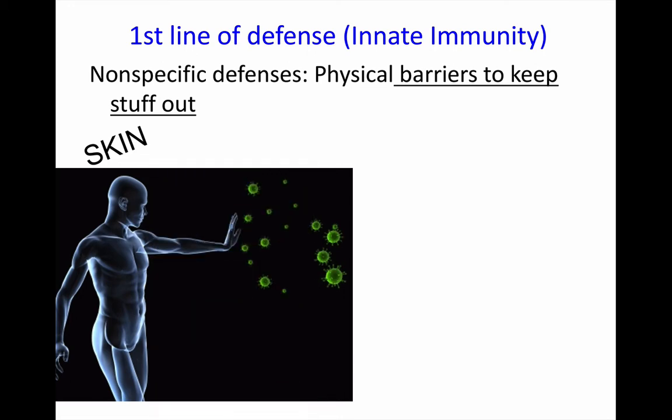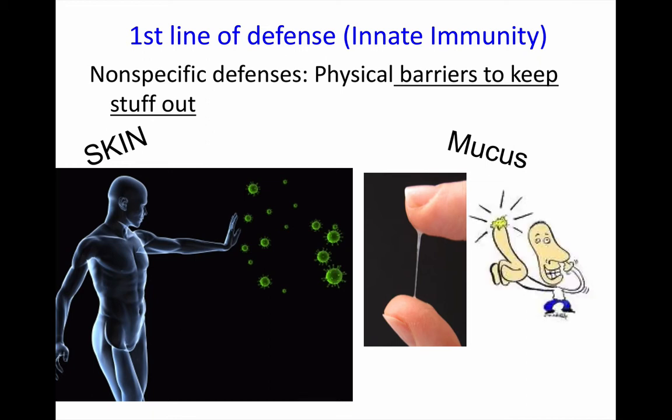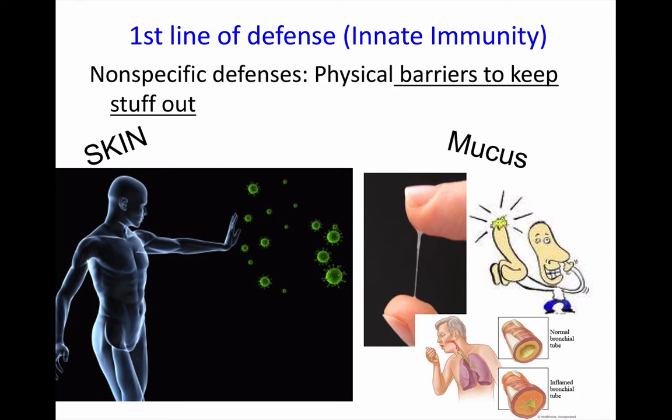Unfortunately, we have openings in the skin — our eyes, nose, mouth, ears, and reproductive areas — that allow bacteria and viruses to get in. So we often have things that protect us, such as mucus in those areas. Mucus is a sticky substance that traps bacteria and viruses. We find it in our nose and also our respiratory tract.